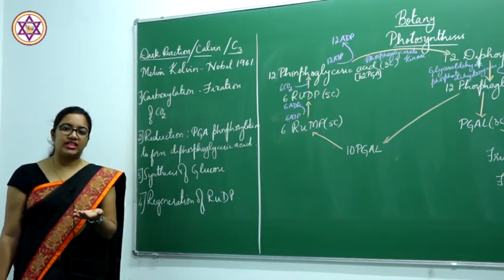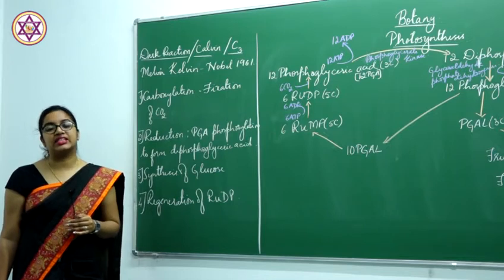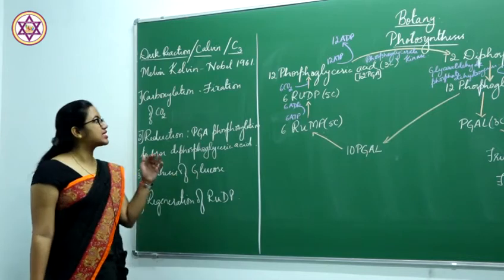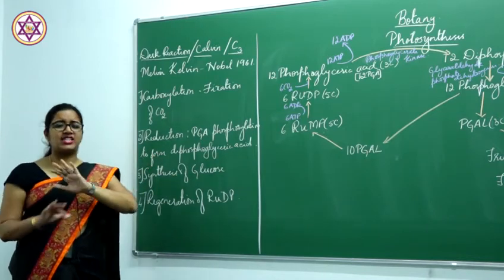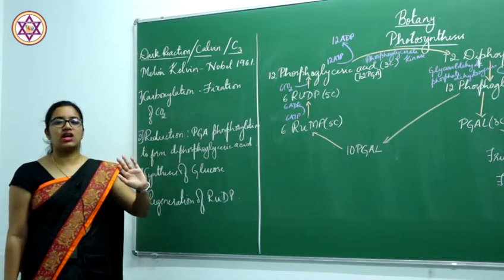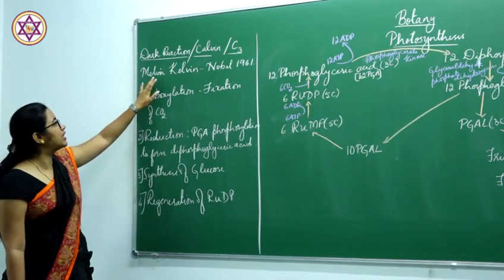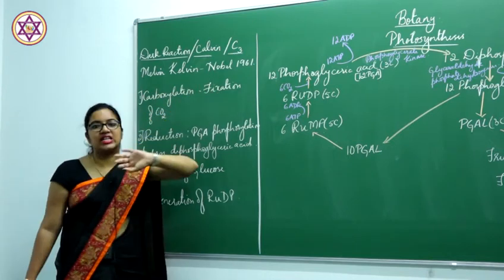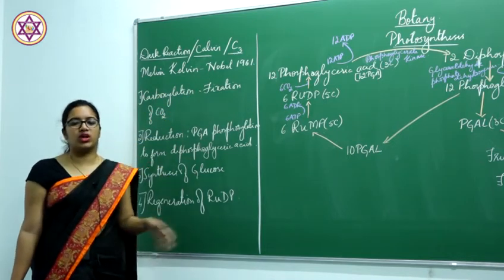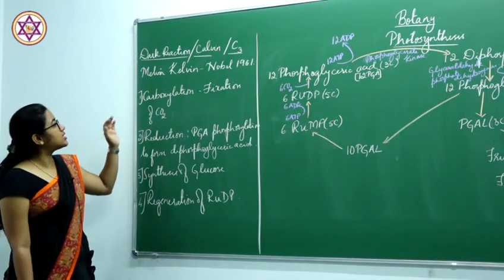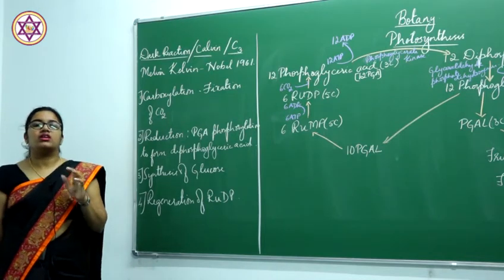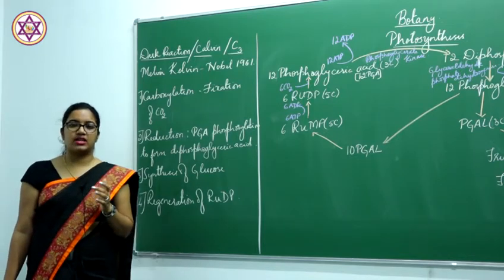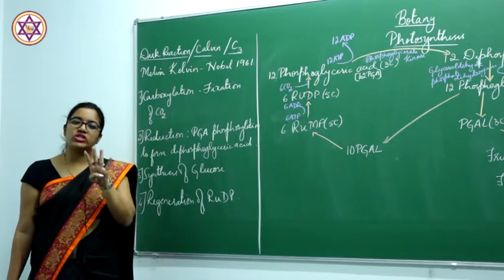In dark reaction they may not need light but they definitely need temperature. This reaction was discovered by Melvin Calvin, and they were awarded the Nobel Prize in the year 1961 for their work on dark reaction.